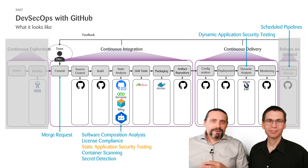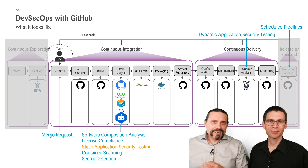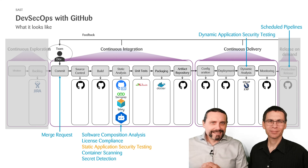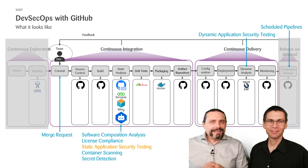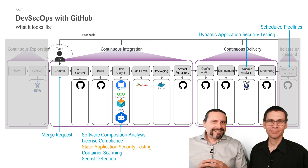In our past video, we had a look at our sample project which we built with our pipeline. Afterwards, we had a look at the software composition analysis, and then we had a look at the license compliance check. And in this video, we will have a look at static application security testing, which is SAST.